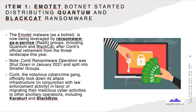Item one: Emotet botnet started distributing Quantum and Black Cat ransomware — two different flavors. Emotet malware, originally a botnet, is now being leveraged by ransomware-as-a-service groups, including Quantum and Black Cat, after Conti's official retirement from the threat landscape. The Conti ransomware operation was shut down last year and split into smaller groups, with Conti officially taking down its attack infrastructure in conjunction with law enforcement, migrating malicious activities to other ancillary operations including Karakurt and BlackByte.